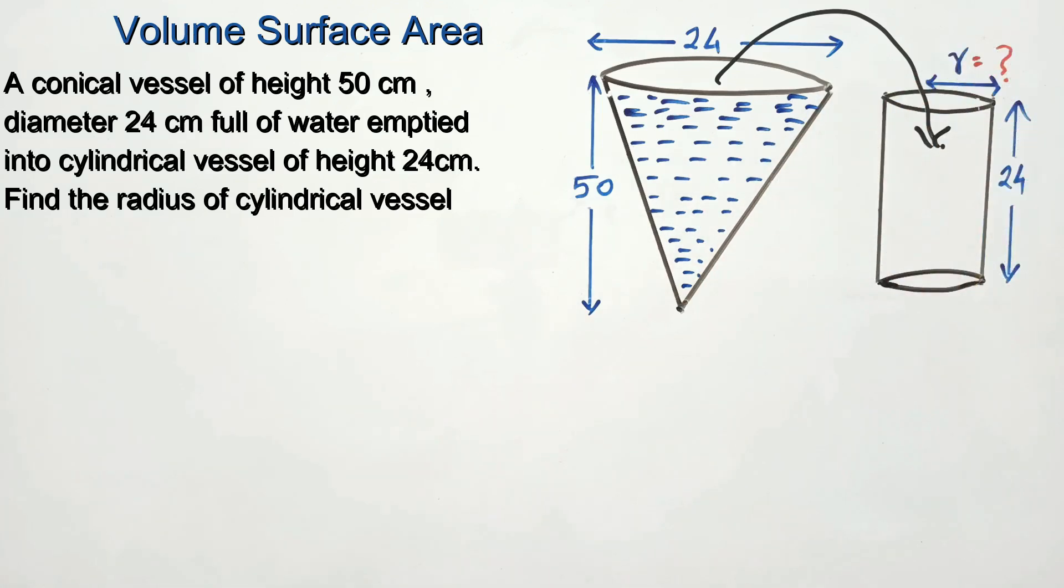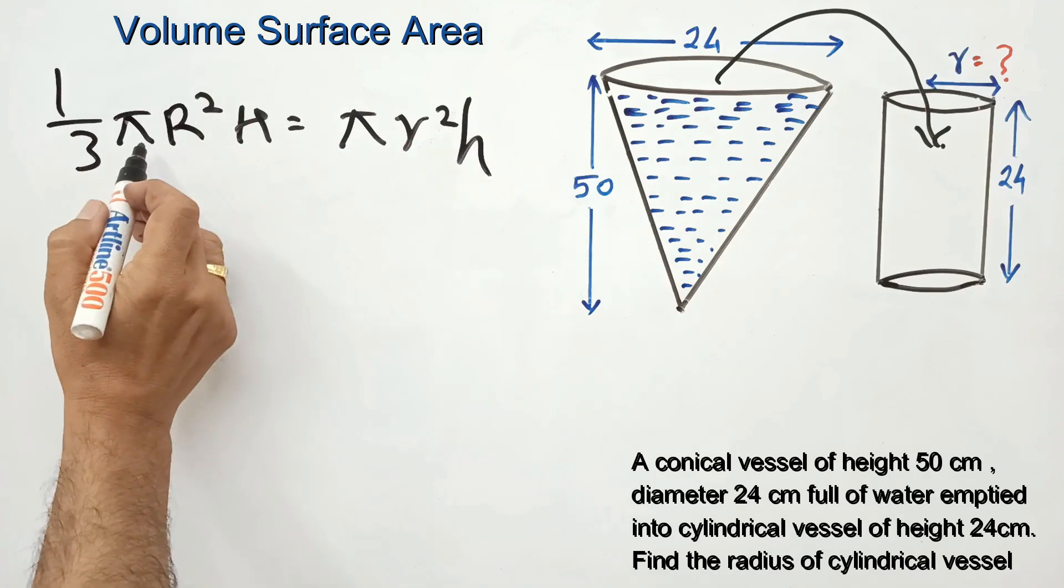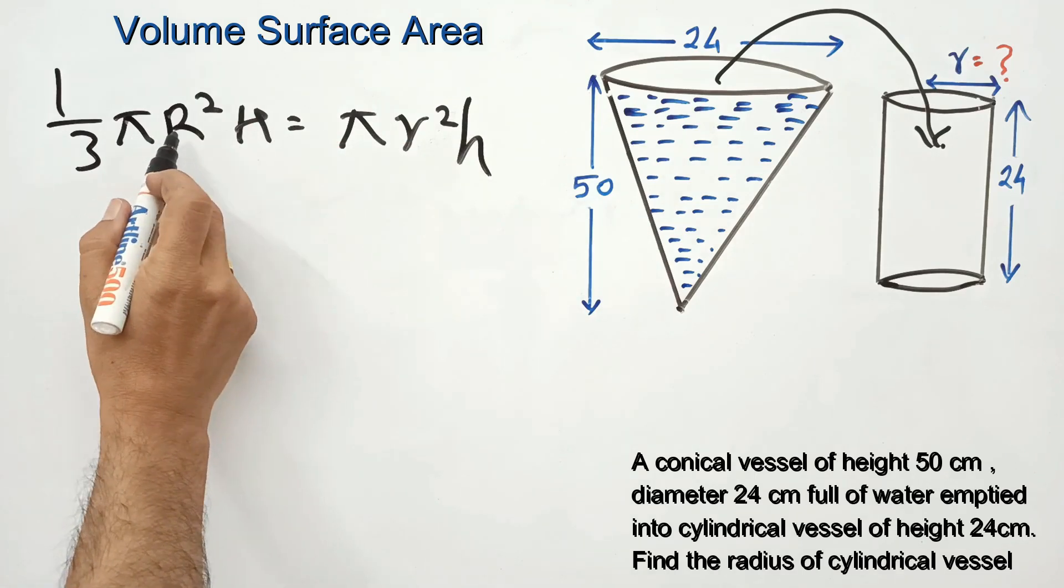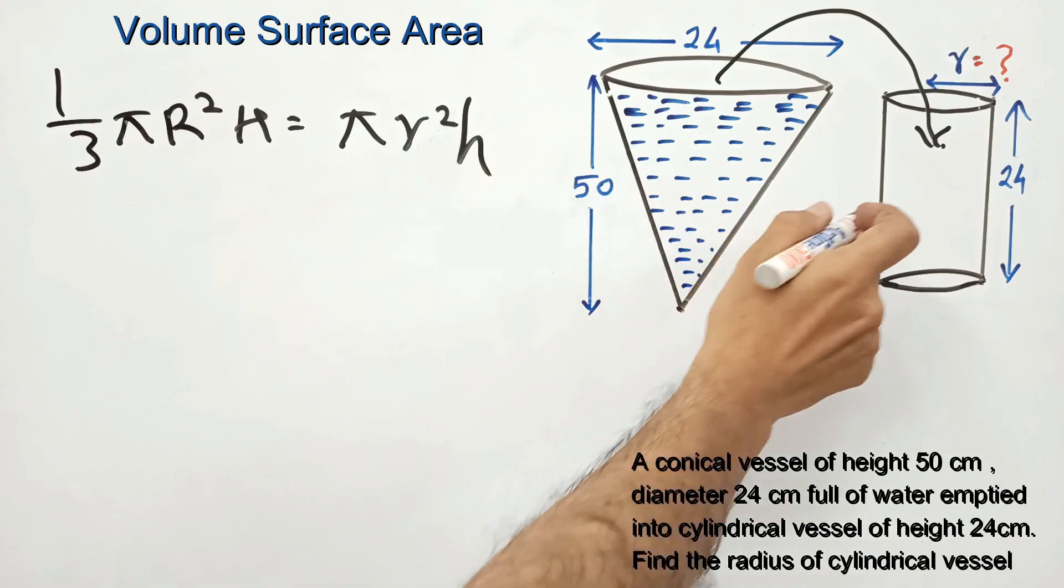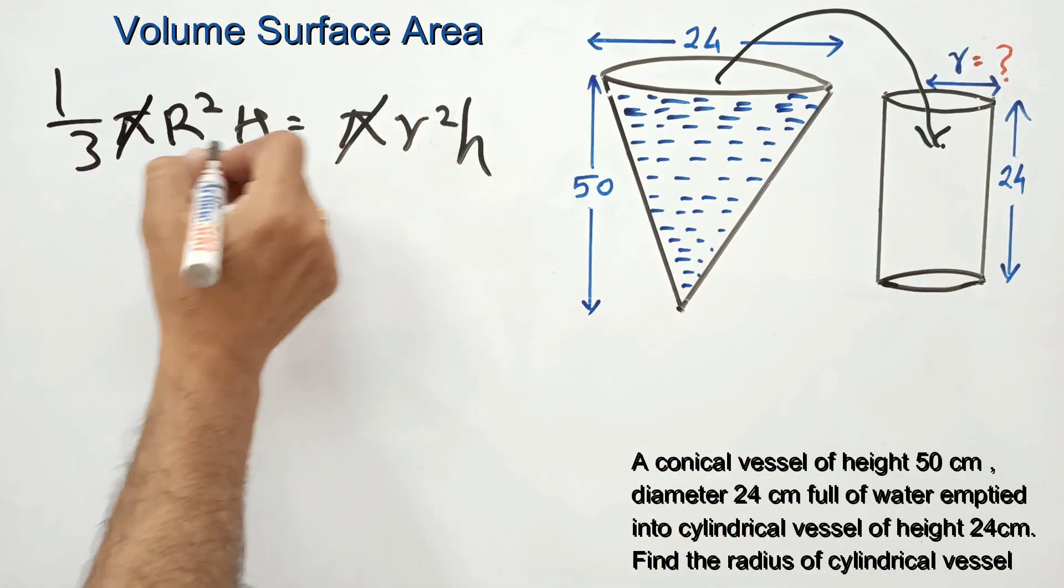in the cylindrical vessel. Volume of the cone equals volume of the cylinder. Here we use different symbols: R capital and H capital for the cone, and r small and h small for the cylinder. In this kind of question, you should